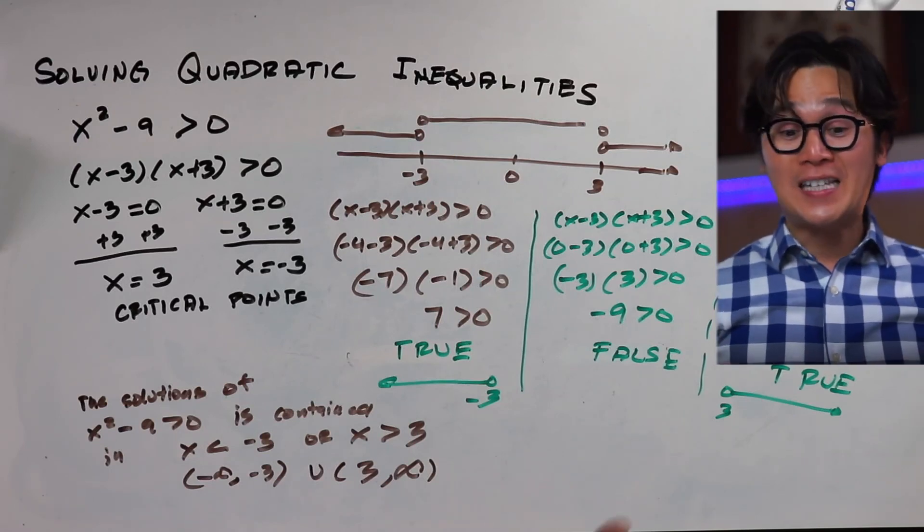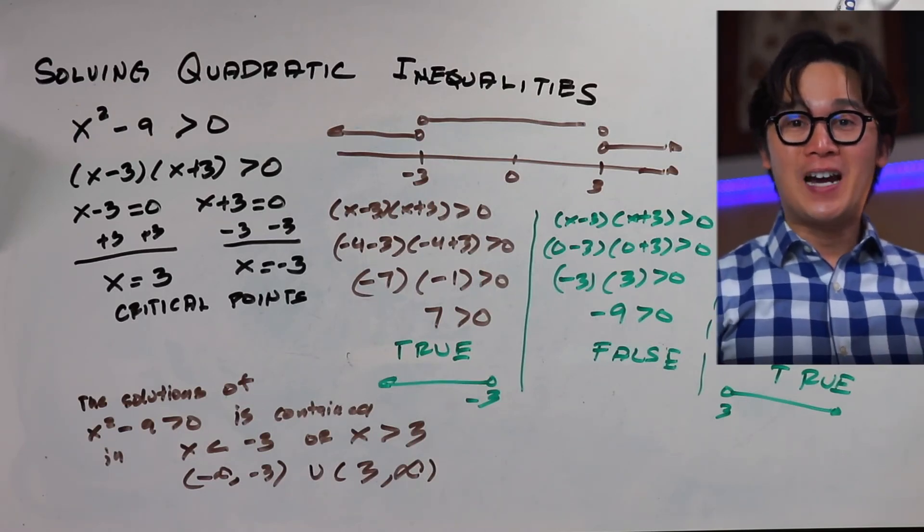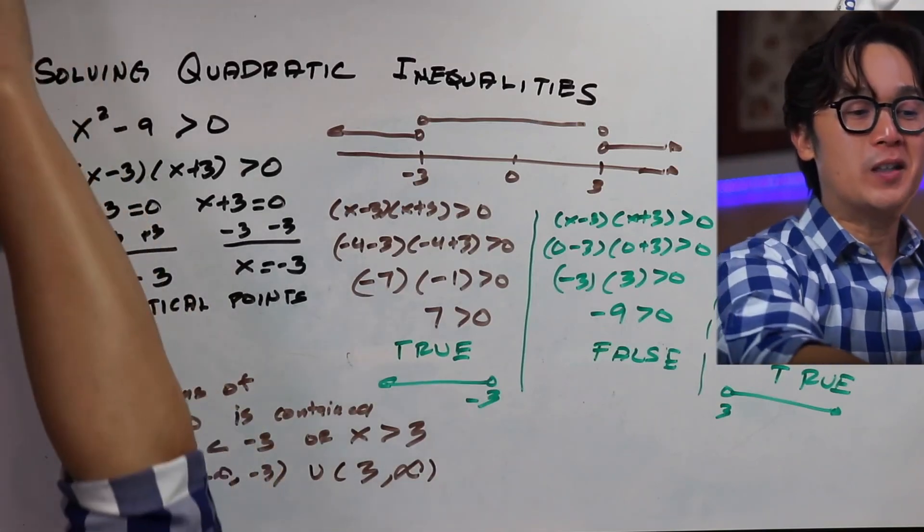Notice that we used a greater than symbol, which is why the answer was outside the partitions, unlike the previous example. To summarize, solving quadratic inequalities involves three steps: one, find the critical points; two, draw a number line or sign chart; and three, test each partition by plugging in points. This is Dr. Ian — see you next time. Bye!